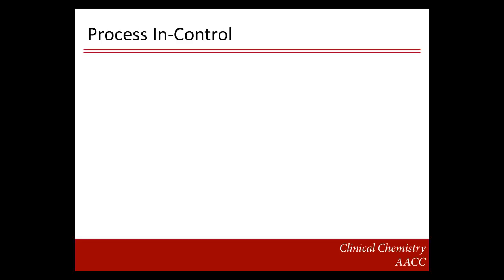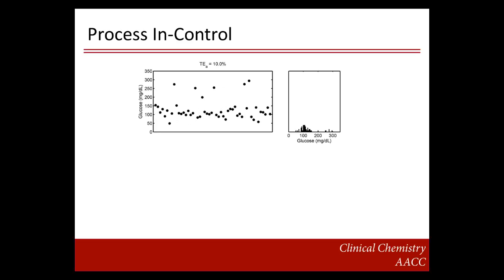I'm going to demonstrate this concept using animations. The left panel shows patient testing in time. We're using glucose as an example here. The black dots are glucose test results. The right panel shows the patient distribution for glucose. Even when the process is in control, every patient result has some measurement error. For example, if you test glucose on a single patient multiple times, you wouldn't get the exact same value each time. The black dots represent the measured result, and the black vertical bars represent the degree of imprecision in the patient test results.